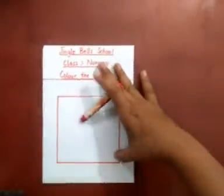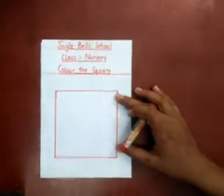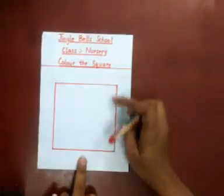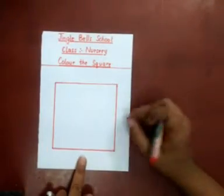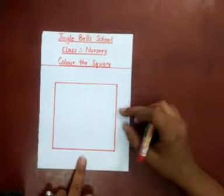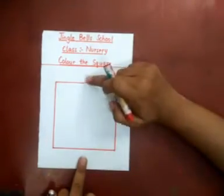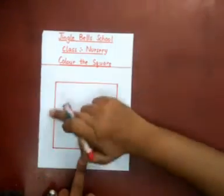Students, first of all you have to identify which shape this is. This is a square. A square has four sides — one, two, three and four.